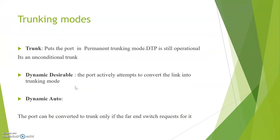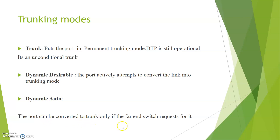Let us discuss the trunking modes. The trunk mode puts the port in a permanent trunking mode — DTP is still operational and maintains an unconditional trunk between two neighboring switches. Dynamic desirable means the port actively attempts to convert the link into a trunking mode — this is active behavior. Dynamic auto is passive behavior, meaning the port will only convert to a trunk if the foreign switch initiates or requests a trunk.